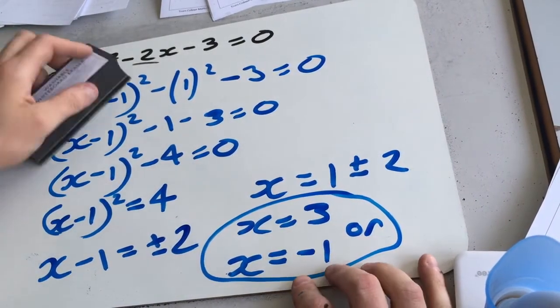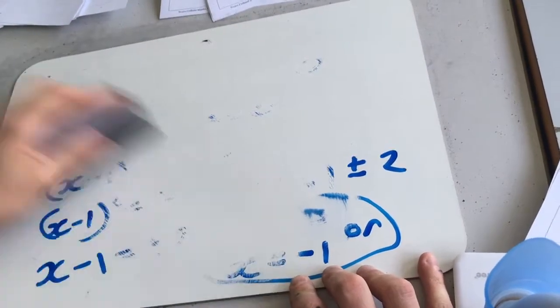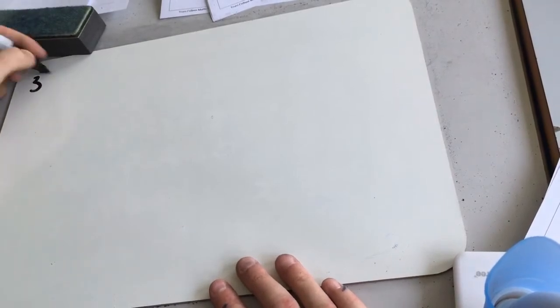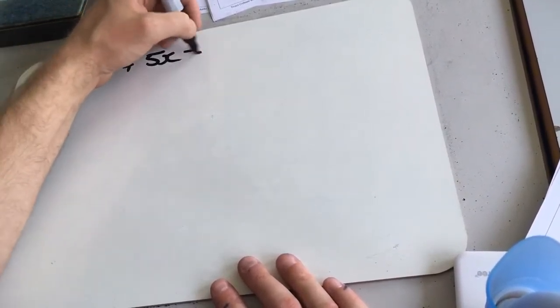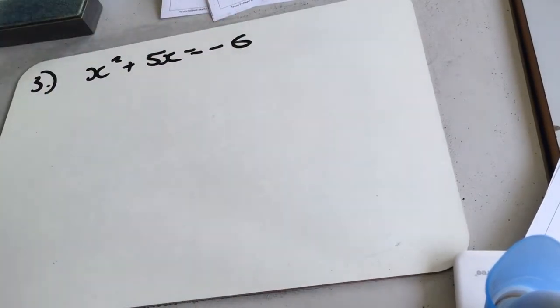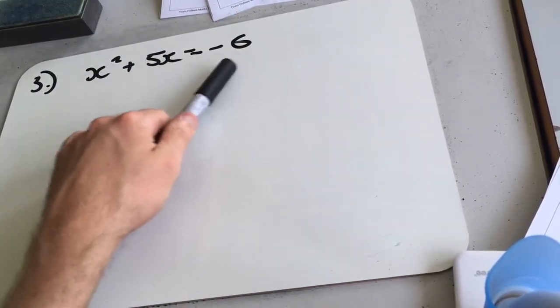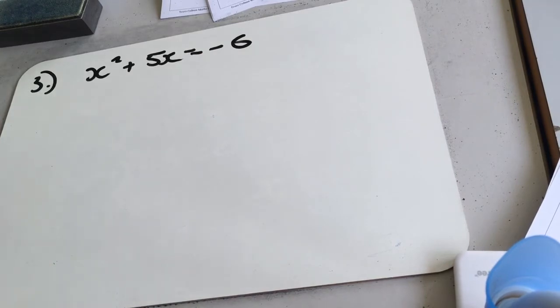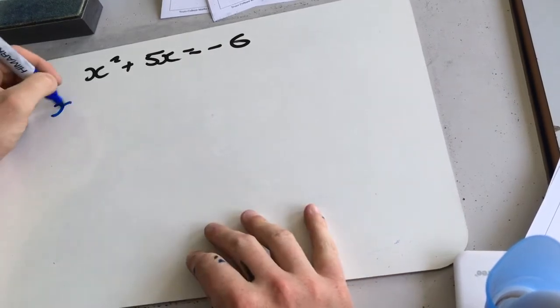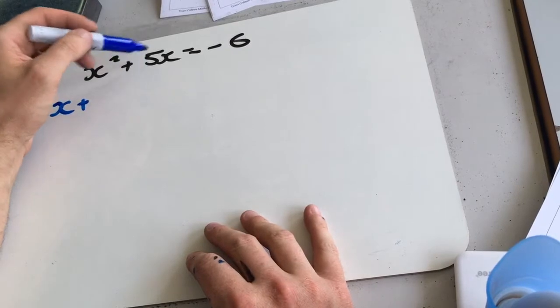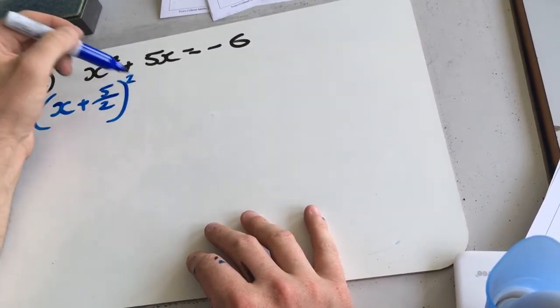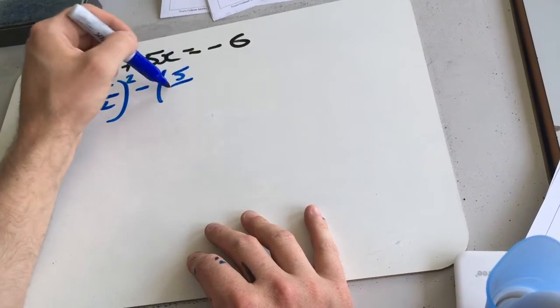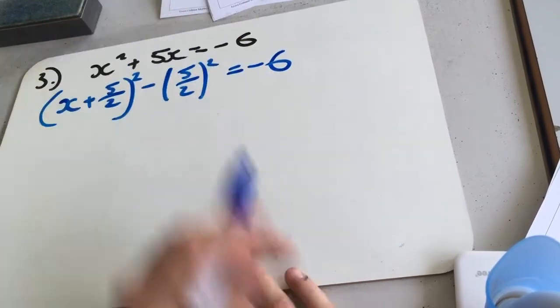Last one then. So x squared plus 5x equals minus 6. So we can complete the square on this and then start rearranging it and just leave the 6 where it is. Now it's in quite a convenient place anyway. So we get x plus b over 2, 5 over 2, leave it as a fraction, squared, minus 5 over 2 squared, equals minus 6.